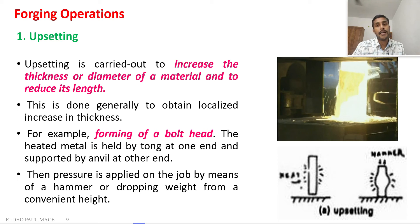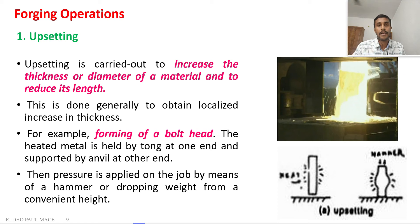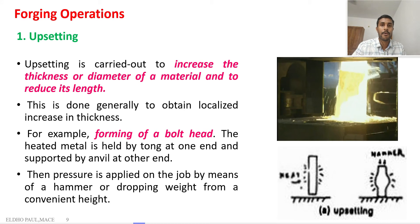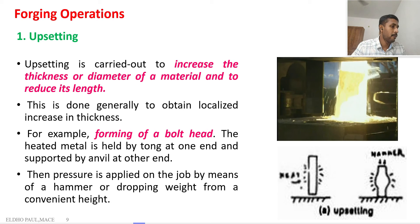In this class we are going to discuss the different types of forging operations. For manufacturing a particular component, we need to do different forging operations in a continuous manner, then only we can convert a raw material to a final product. The forging process involved in transforming a raw material to a final product involves a combination of different forging operations.